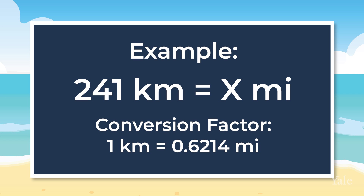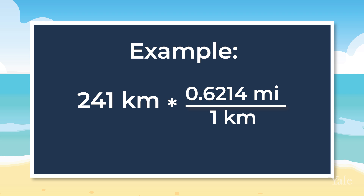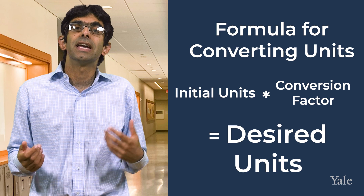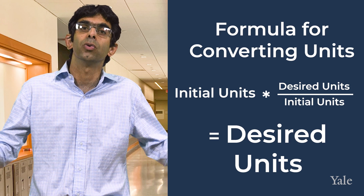We can write this conversion factor as 0.6214 miles divided by one kilometre. Then we multiply the distance in kilometres by the conversion factor. So 241 kilometres times 0.6214 miles over one kilometre equals 150 miles. The kilometres in the numerator cancel out with the kilometres in the denominator, leaving us with the distance in miles. We can write the general formula as: initial units times desired units over initial units, which equals the desired units.